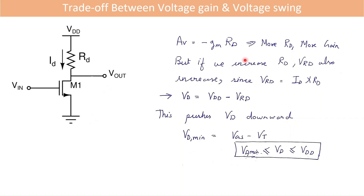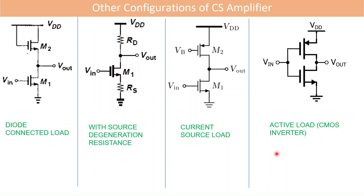As a circuit designer, there is always a trade-off between voltage gain and other characteristics. For a common source amplifier with resistive load, there is a trade-off between voltage gain and voltage swing. If we increase RD to increase gain, the voltage drop across RD also increases, pushing VD downward since VD equals VDD minus VRD. The minimum VD must be VGS minus VT, so the output range is limited, meaning more gain results in reduced voltage swing.